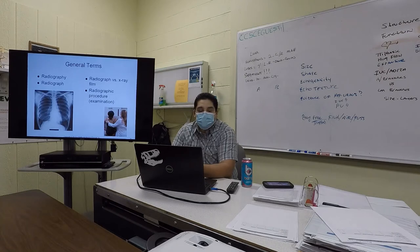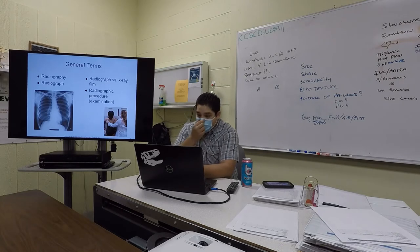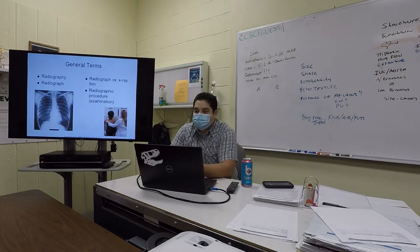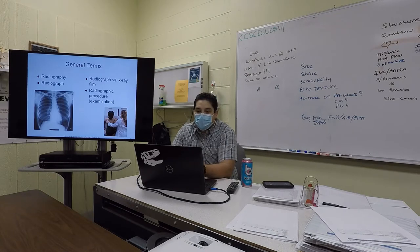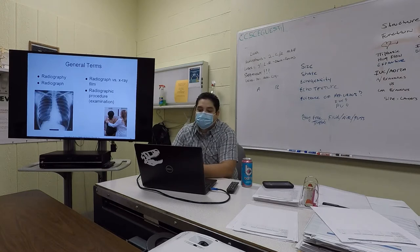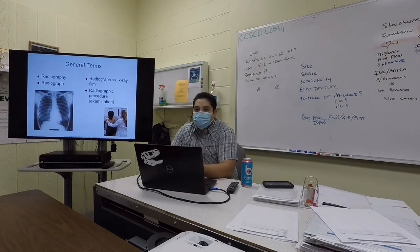Film radiography is less commonly used nowadays but still exists, working very similarly to film photography. The film has an emulsion which gets exposed, then it goes through a processor for development, stopping, and washing. Primarily nowadays we use digital radiography, viewing images as soft copy on the computer screen.